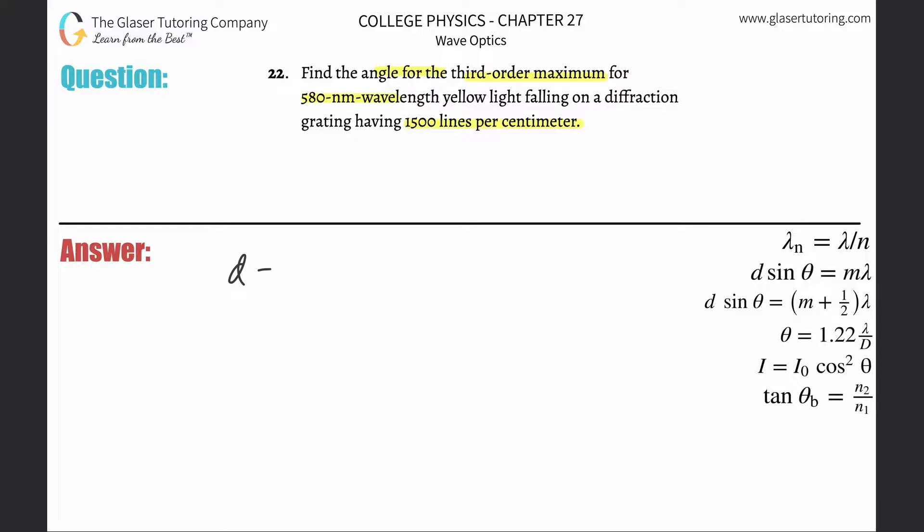All we have to do is basically invert this. We need the centimeters per line. In other words, they said it was 1500 lines per single centimeter, so now I'm just going to invert it, so it's 1 over 1500.